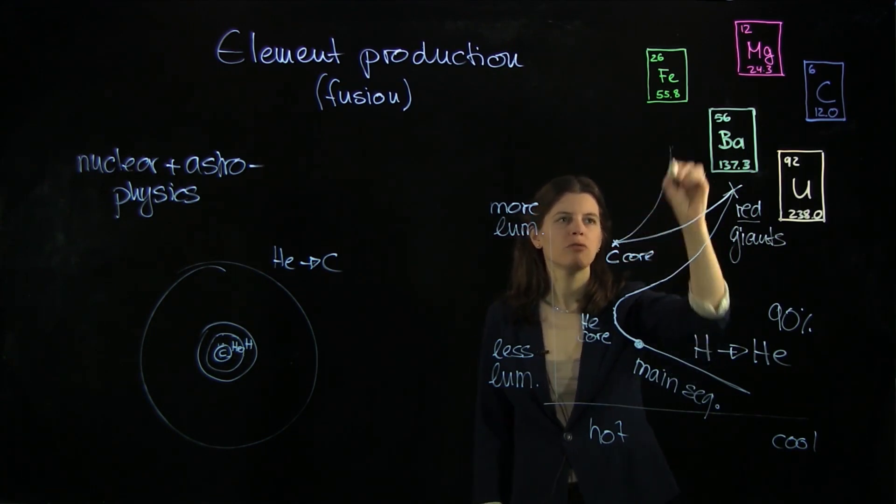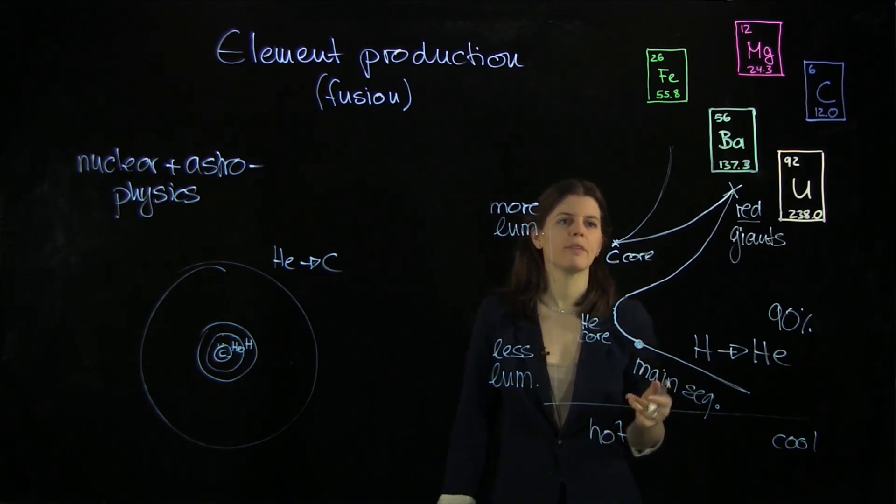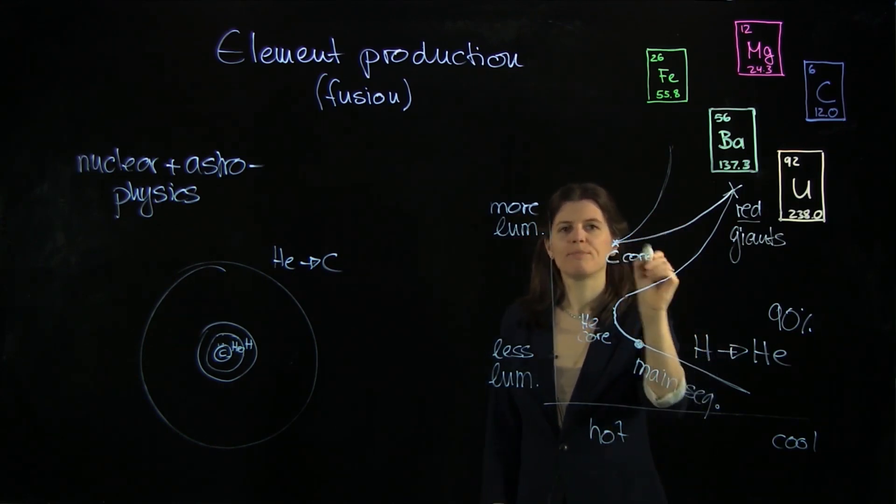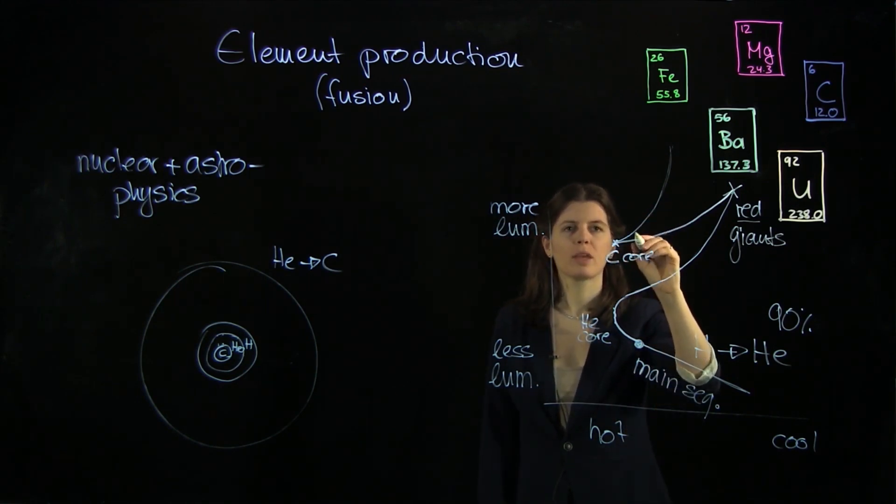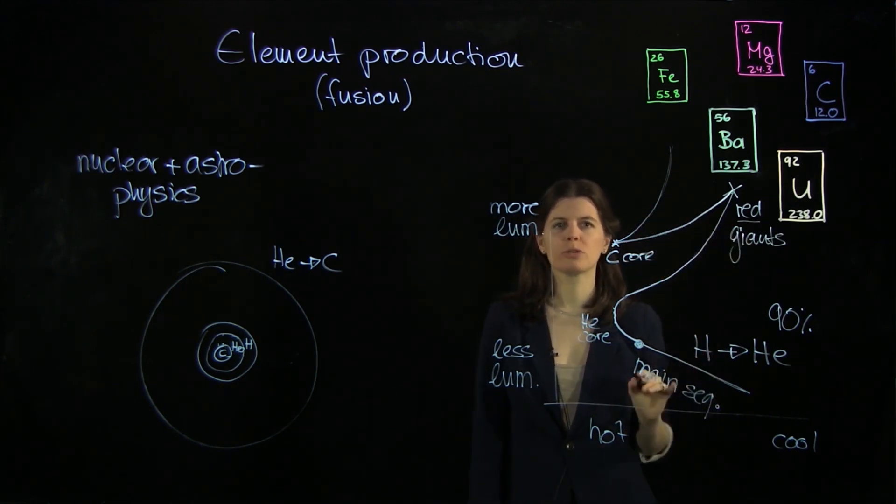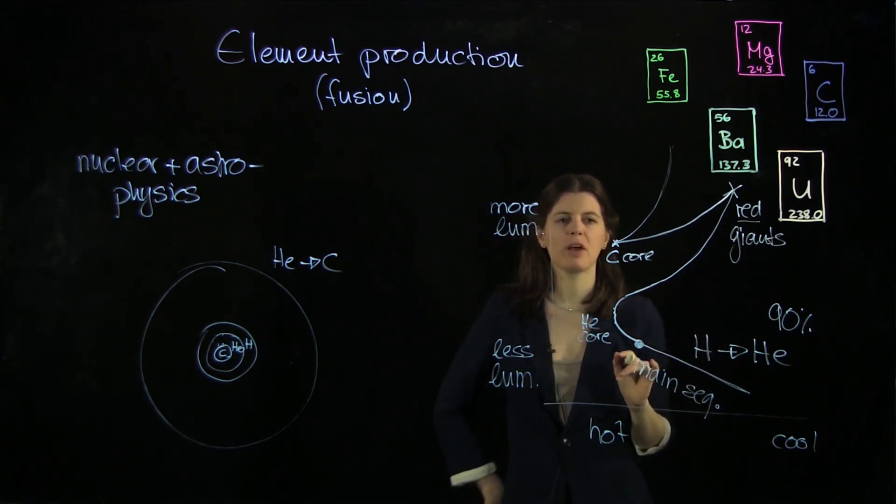And this last part here it really depends on the mass of the star. The Sun is actually not going to do much. It's going to just stick it out with a carbon oxygen core here and then turn into white dwarf and just cool down. So the Sun is actually pretty boring star that has a pretty boring fate.